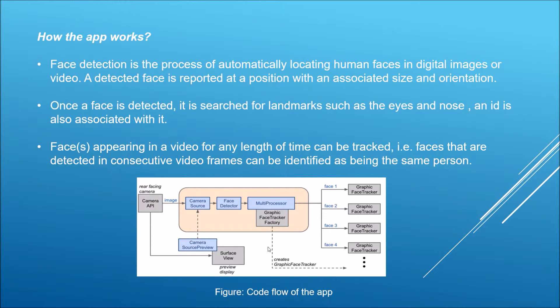Face detection is the process of automatically locating human faces in digital images or video. The detected face is reported at a position with an associated size and orientation. Orientation is defined by Euler angles with three coordinates: x, y, and z. Orientations can vary from 0 to 90 degrees, but the Google Face API has a limitation — it only monitors at a Euler angle of less than 18 degrees in any of the coordinates x, y, or z.